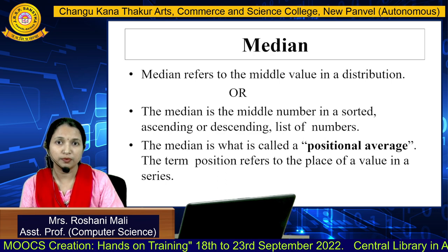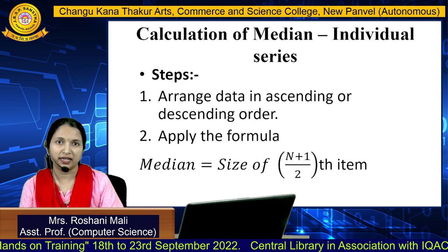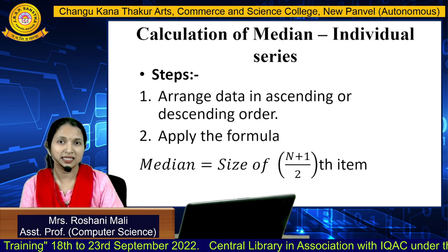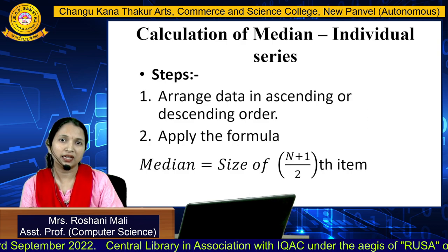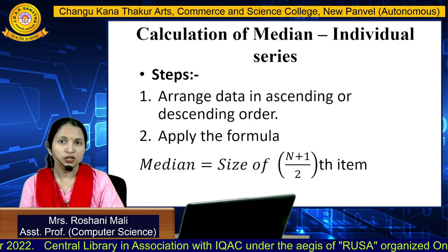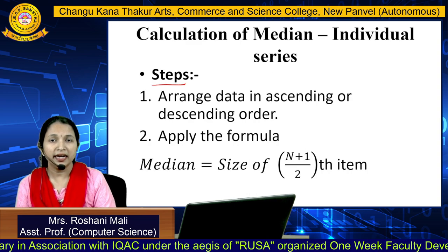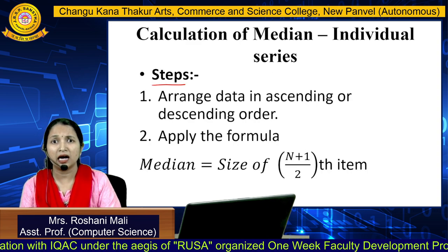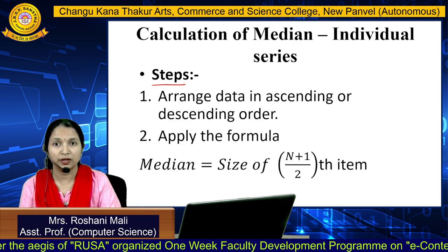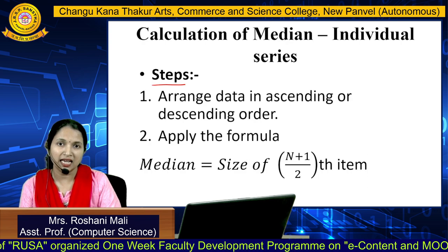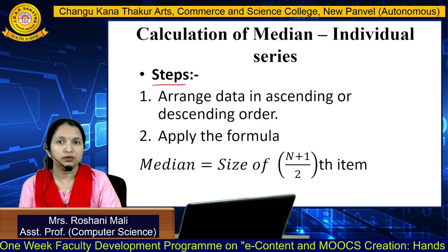Because it refers to the middlemost position of your distribution. We have three types of data: individual series, discrete series, and continuous series. First we'll see how to calculate median for the individual series. The steps are: first arrange the data in ascending or descending order, then apply the formula — median equals the size of the (n+1)/2 th item.